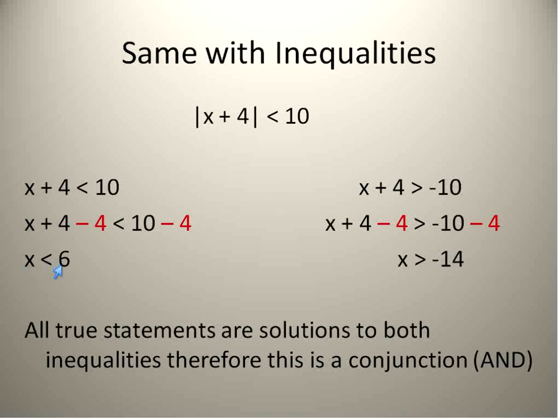In this case, x can be less than 6 and greater than negative 14. So all the solutions for this conjunction would be between the numbers negative 14 and positive 6, not including the values of negative 14 and positive 6 because it has to be greater than or less than, not equal to those numbers.